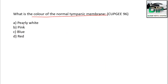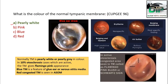Next question: What is the color of the normal tympanic membrane? Options: A) Pearly white, B) Pink, C) Blue, D) Red. The correct answer is pearly white. Normally the tympanic membrane is pearly white or pearly gray in color. A pink tympanic membrane is seen in 10% of otosclerosis cases.